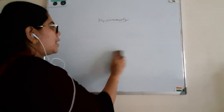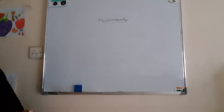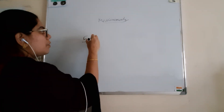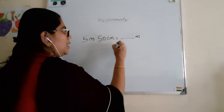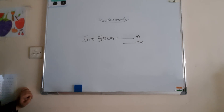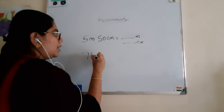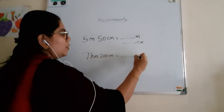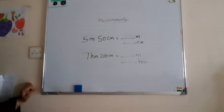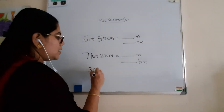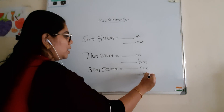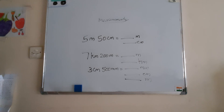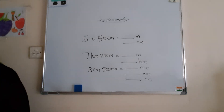Now I am going to give you one test. Write the questions and try to solve them, and write the answer in the comments. Question 1: 5 meter 50 centimeter — convert to meter and also convert to centimeter. Question 2: 7 kilometer 200 meter — convert to meter and also convert to kilometer. Try these and write the answer in the comments. Hope you understand — enjoy your day, bye!